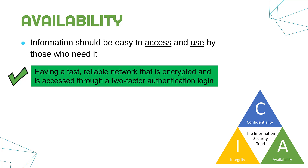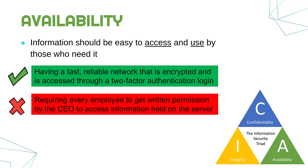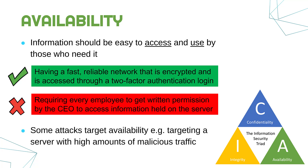Reliability is important — if things are going down all the time, that obviously affects availability. An example of going too far: requiring every employee to get written permission from the CEO to access any bit of information on the server. That would be almost certainly too much and would massively affect availability, even if it might be good for confidentiality and integrity. There are also attacks which target availability — for example, flooding a specific server with high amounts of malicious traffic to crash it and prevent access. This is sometimes called a DDoS attack.